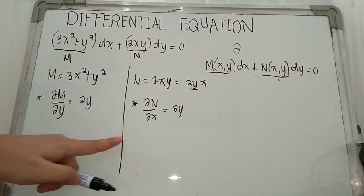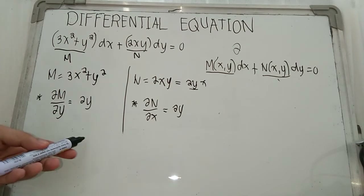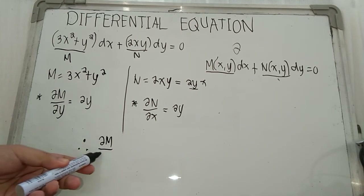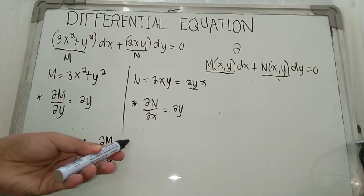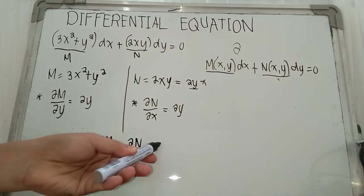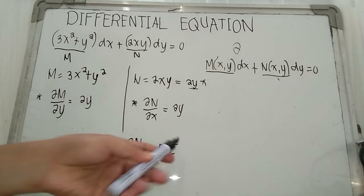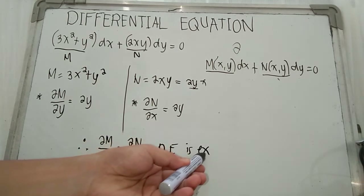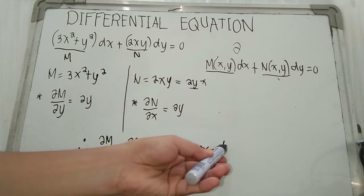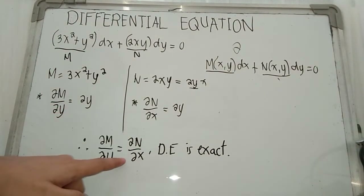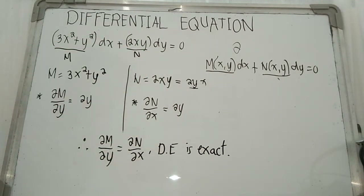You have to be careful: in finding ∂M/∂y, x serves as the constant, while in finding ∂N/∂x, y serves as the constant. Are the results the same? Yes. Therefore, the partial derivative of M with respect to y equals the partial derivative of N with respect to x, and the given differential equation is an exact equation.